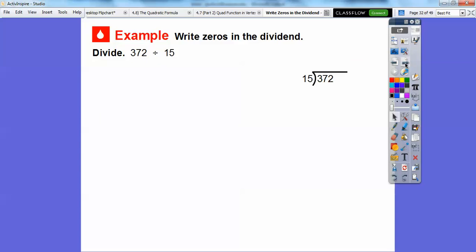Here's another example. Let's go ahead and divide. We're going to write zeros in the dividend. We're going to divide 372 divided by 15. Fifteen doesn't go into three, but it does go into 30. Let's just divide until we have an amount that's less than the divisor left over. We'll keep dividing until we get something less than 15 and we run out of digits.